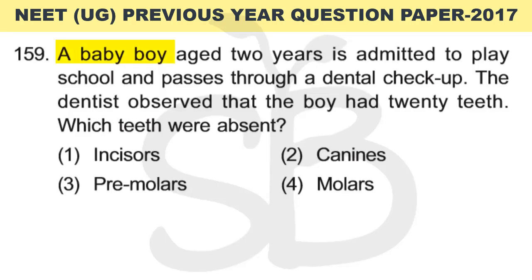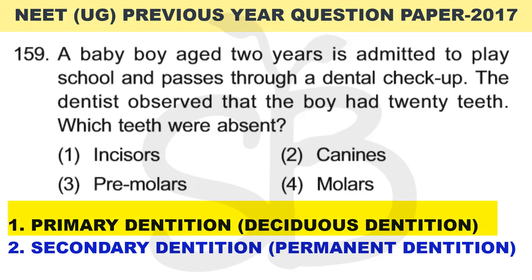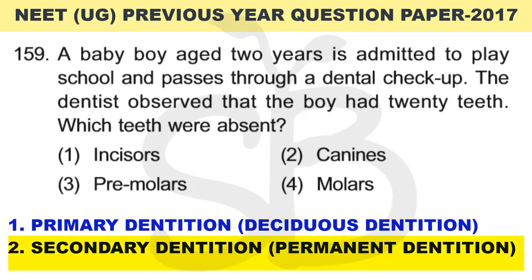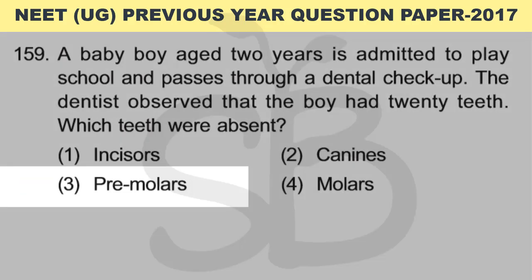Question number 159: A baby boy aged 2 years is submitted to play school and passes through a dental checkup. The dentist observed that the boy had 20 teeth — which teeth were absent? We have two types of dentition: primary dentition (deciduous dentition) and permanent or secondary dentition. The correct answer is option 3: premolars.